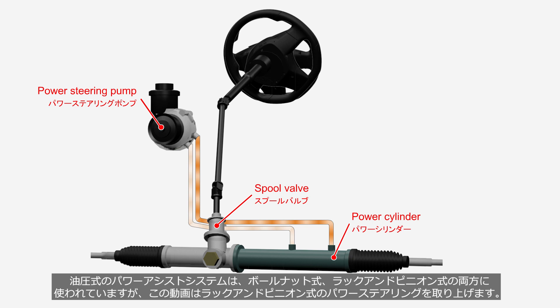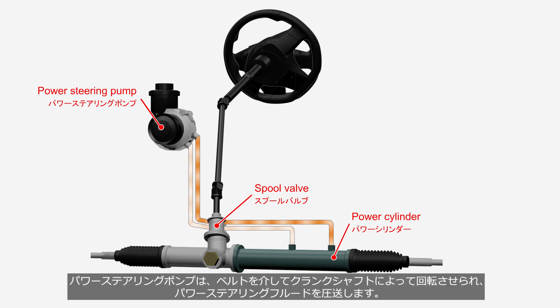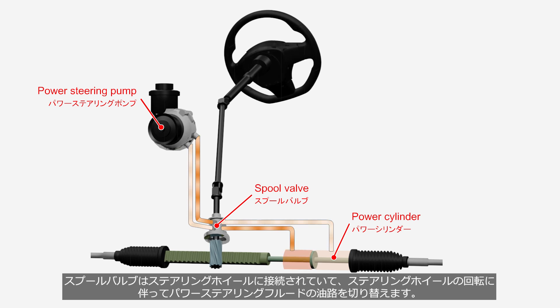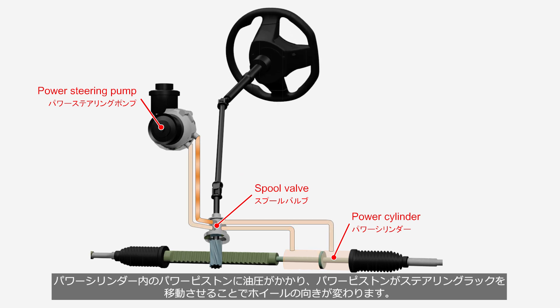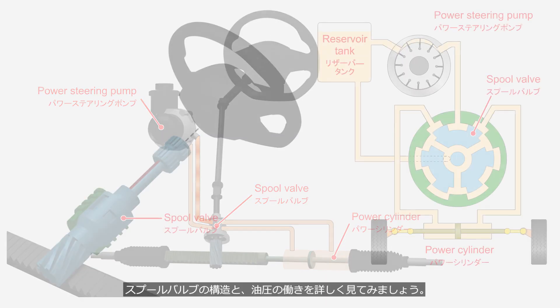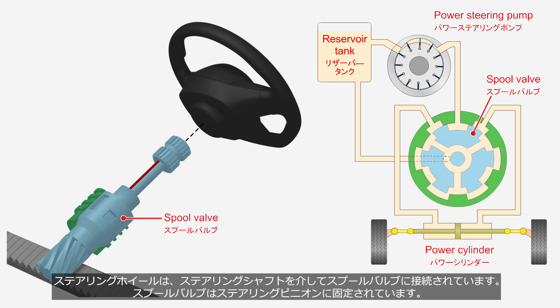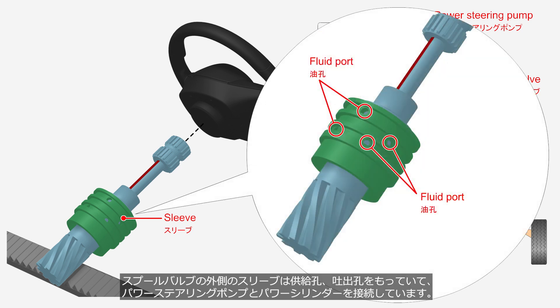Hydraulic power-assist systems are employed in both recirculating ball-and-nut and rack-and-pinion steering systems. This video focuses on the rack-and-pinion power steering system. The hydraulic power steering system consists of a power steering pump, a spool valve, and a power cylinder. The power steering pump is rotated by the crankshaft through a belt and pumps the power steering fluid. The spool valve is connected to the steering wheel and, with the rotation of the steering wheel, switches the hydraulic pathways for the power steering fluid.